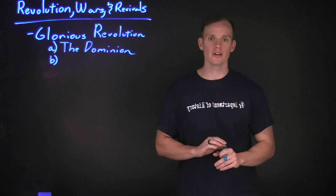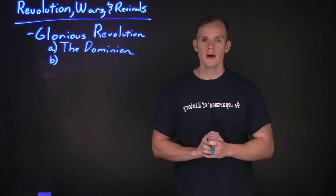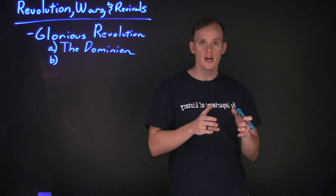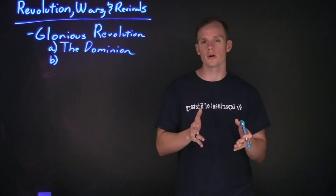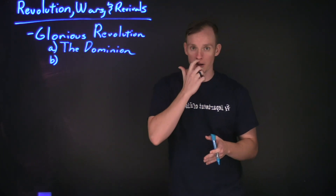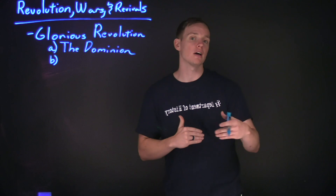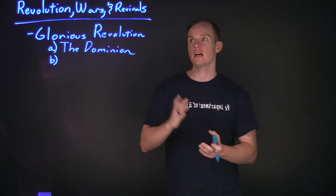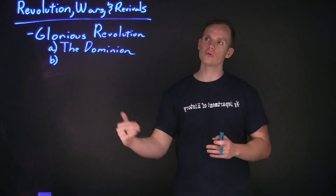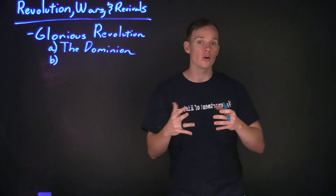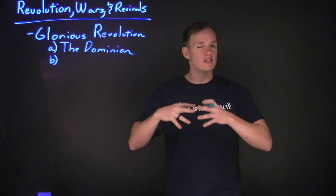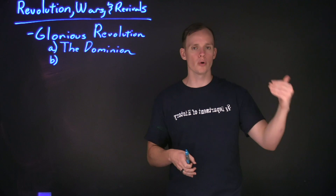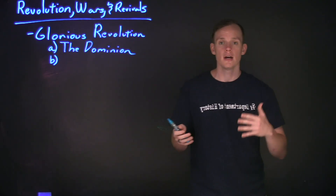Welcome back, everybody, to another lecture here in History 1301. Last time we went over colonial America and the establishment of the original 13 colonies. Today we're going to move forward and start focusing on what the American colonies will look like as they begin to take shape moving into the 1700s, or the 18th century. The main topic we're going to be focusing on is how revolution, wars, and revivals are going to play an integral part in eventually developing a very unique colonial identity that will lead us down the road to establishing a unified nation.